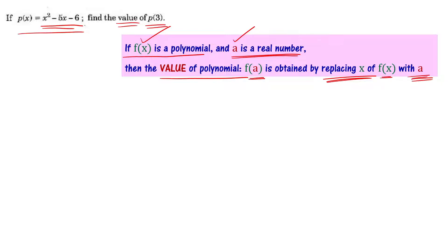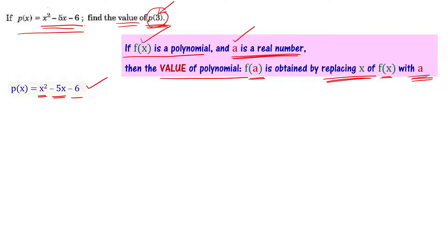So p of x equals x squared minus 5x minus 6, and p of 3 — here 3 is a real number, just like f of a. We want to find p of 3. So we replace x with 3: p of 3 equals 3 squared minus 5 times 3 minus 6.